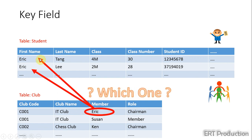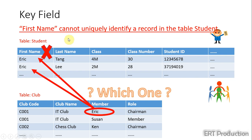Since it's possible that the name Eric repeats among students, we cannot uniquely identify a record by using the field first name.